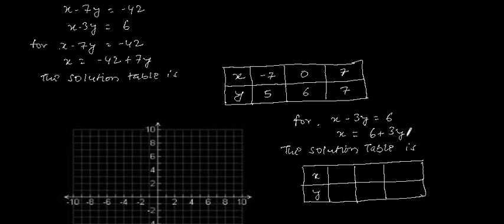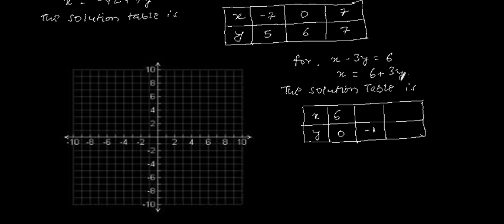By putting values of y, we get the value of x. If y equals 0, then 3 times 0 is 0, so 6 plus 0 gives x equals 6. If y equals minus 1, then 3 times minus 1 is minus 3, so 6 minus 3 gives x equals 3. If y equals minus 2, then 3 times minus 2 is minus 6, so 6 minus 6 gives x equals 0.